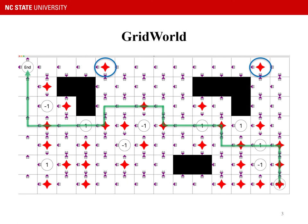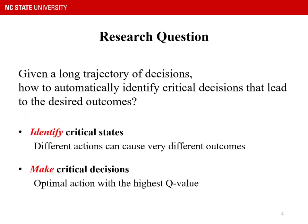So it is very hard to find all critical states in a long trajectory of decisions. Therefore, our research question is: given a long trajectory of decisions, how to automatically identify critical decisions that lead to the desired outcomes?